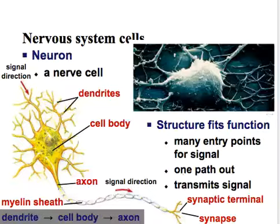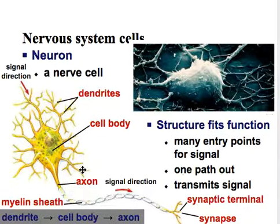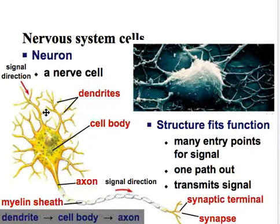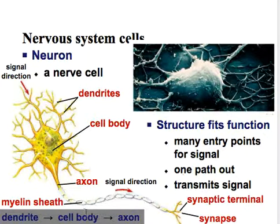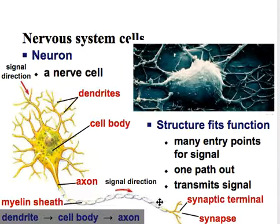Looking a little bit closer at a neuron: we basically have the major cell body, and then we have all these branching structures. These are all like little antennas — these dendrites — that are going to receive signals. The axon is where signals can be sent. A signal comes in from the dendrites and goes out through the axon. Around here, this myelin sheath is a whole bunch of fat covering up the pathway for the signal to travel.